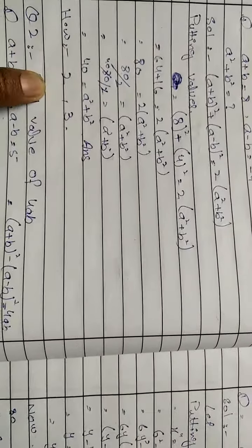8² is 64 minus 5² is 25. So 64 minus 25 equals 39. Therefore 4ab equals 39.